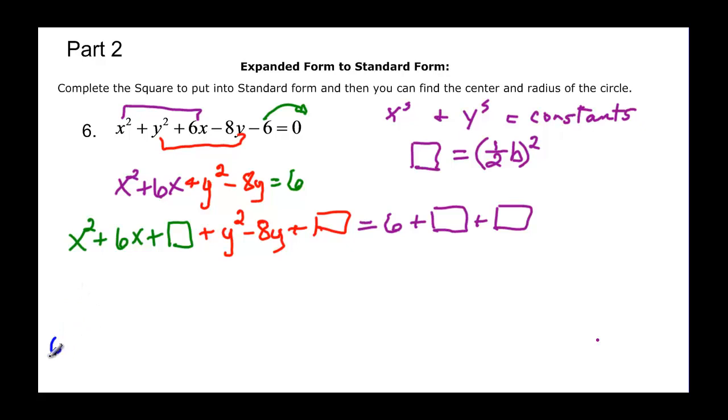We have 6 divided by 2 equals 3 and 3 squared is equal to 9. So we have 9 here, but we have to add it to this side as well.